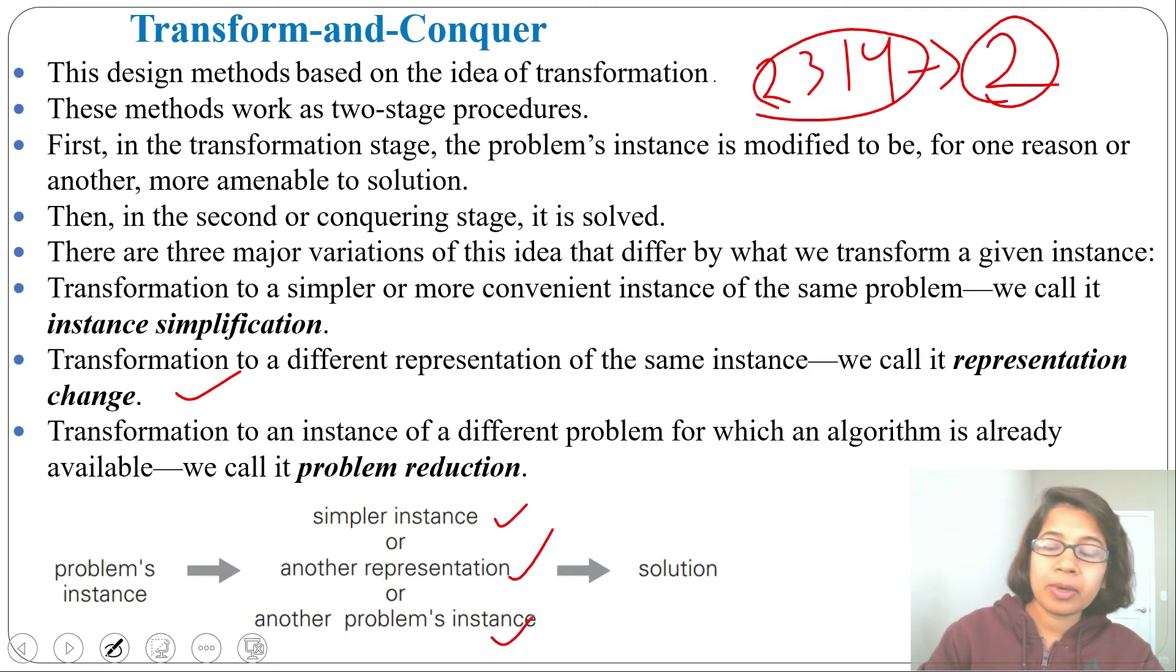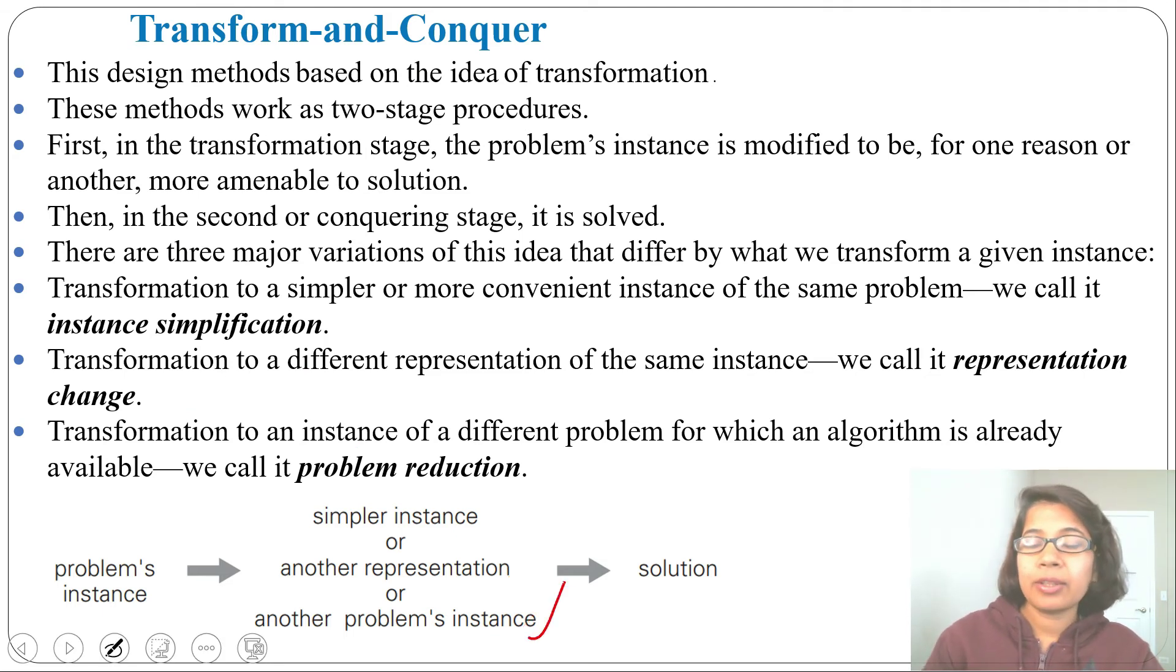Next is another problem instance. Suppose before solving, we are doing first sorting. For sorting there are lots of algorithms present. We are first doing the sorting, then we are trying to solve. So that we can say another problem instance. Some input is given, that input we are considering for another algorithm for which algorithm already exists, then we are trying to solve.